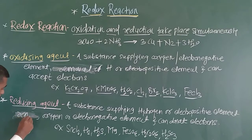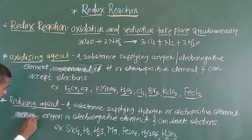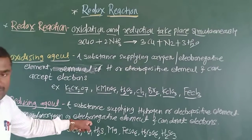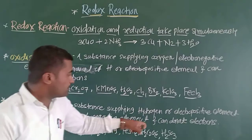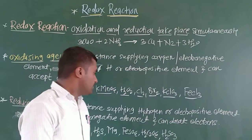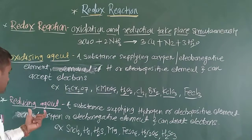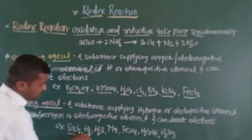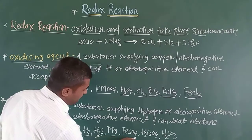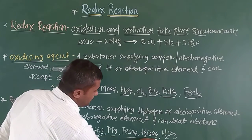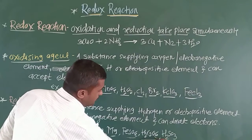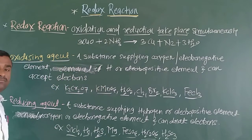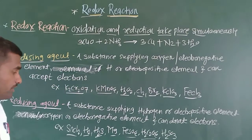A reducing agent may also remove oxygen or an electropositive element, or it can donate electrons. Examples of reducing agents include SnCl2, hydrogen, H2S, magnesium, FeSO4, and Na2SO3.